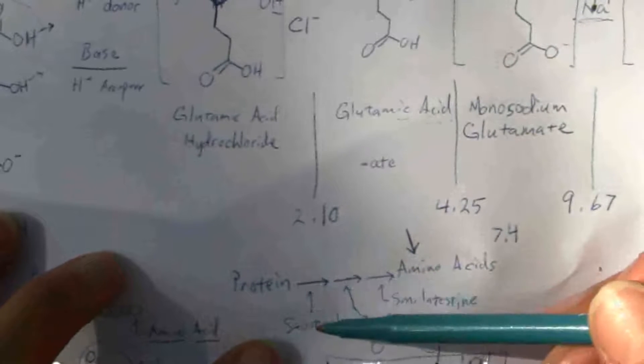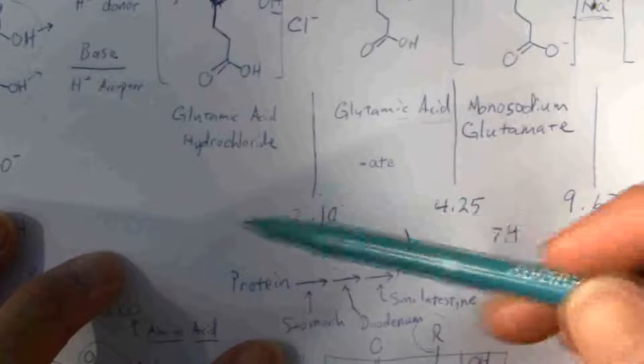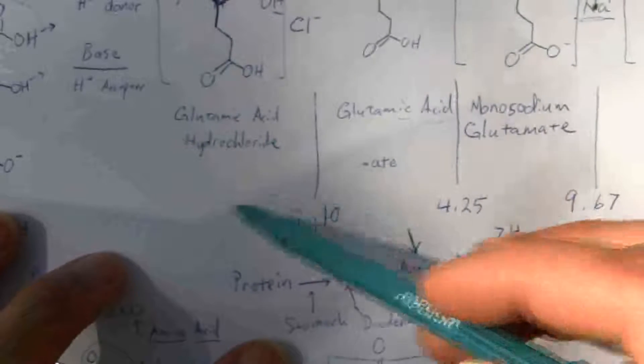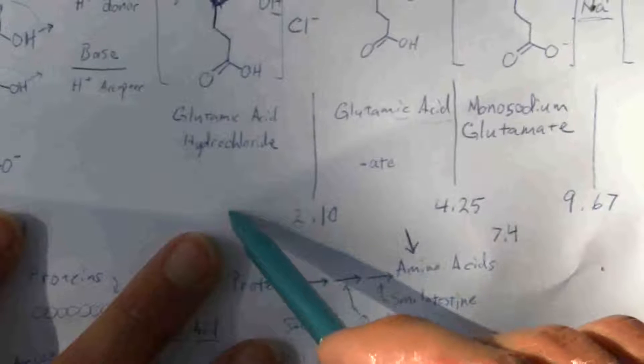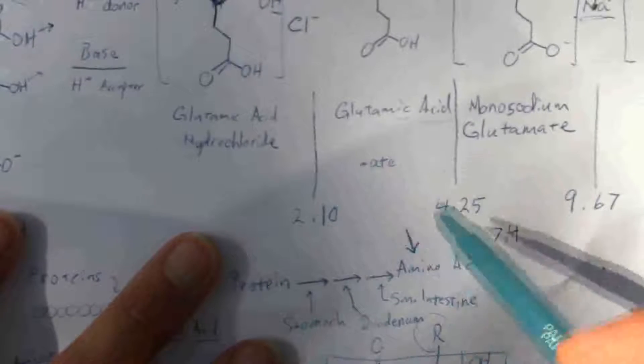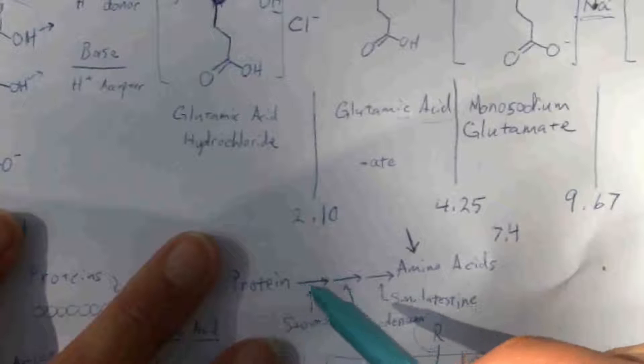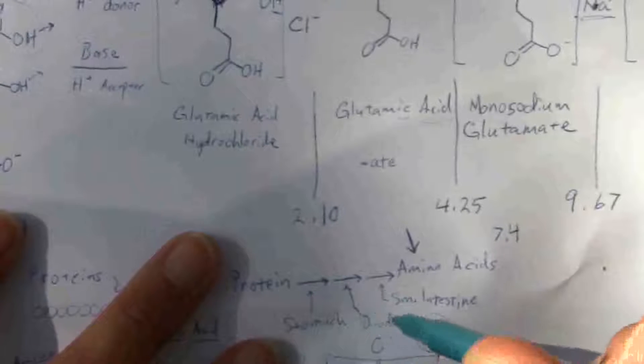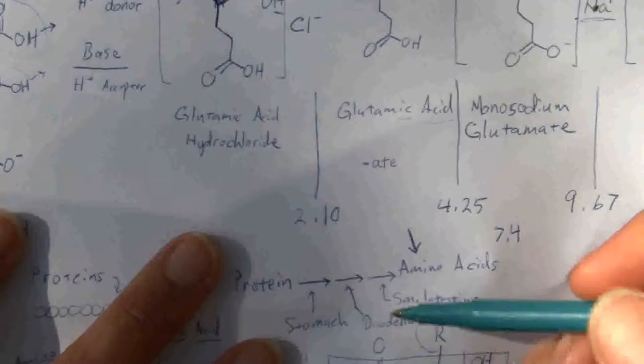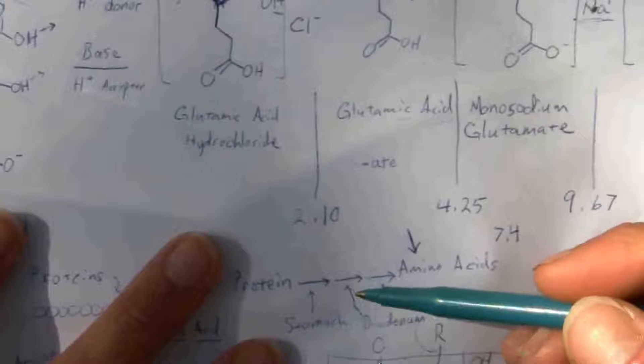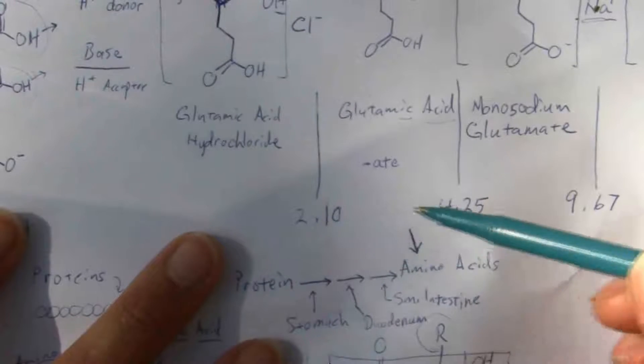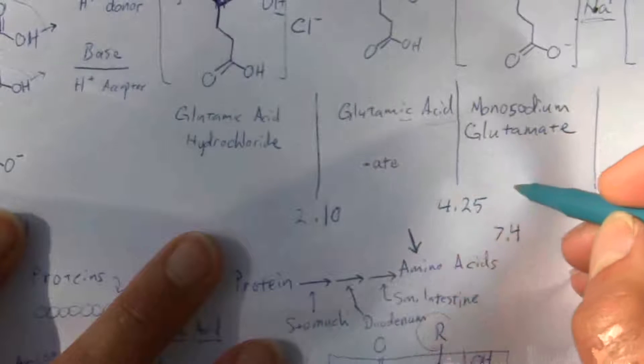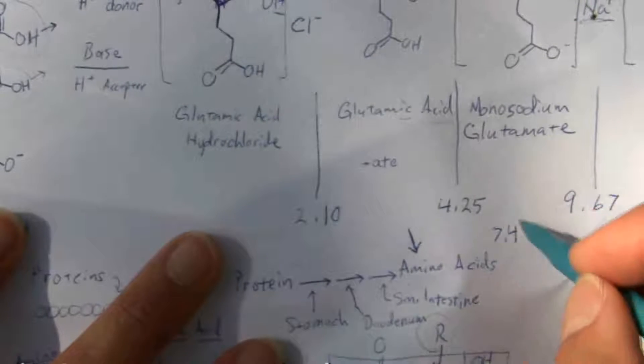Your stomach pH, depending on the meal that you eat, it may get down into this range if you have a very protein-rich meal. More likely, it's probably going to stay down in this range somewhere, but that's in the stomach. Once the food gets into the duodenum, it triggers the excretion of bile. Bile is very alkaline, and that neutralizes the acid, and it brings the pH up into this range close to your normal body.